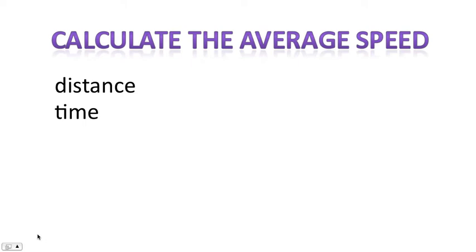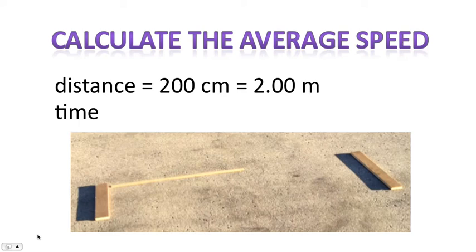And so, in order to calculate the average speed, we'll need distance and time. The distance is exactly two meters, as this is a meter stick here, and the two pieces of wood were placed two meters apart.